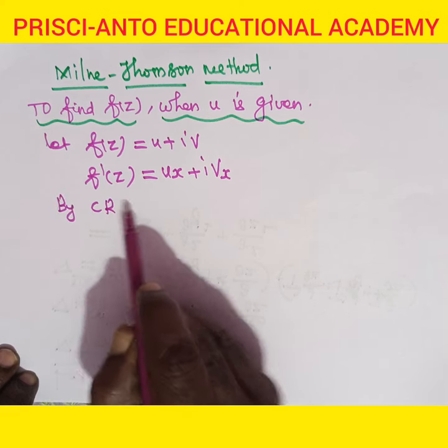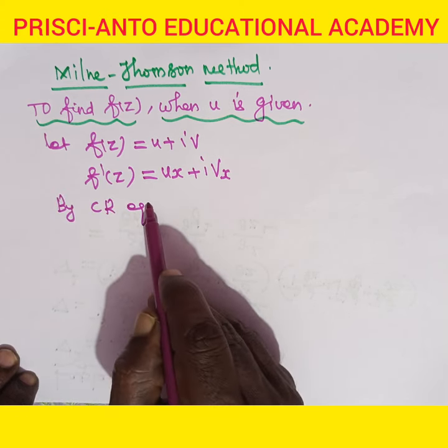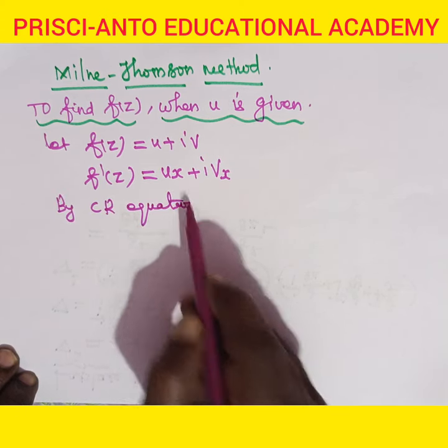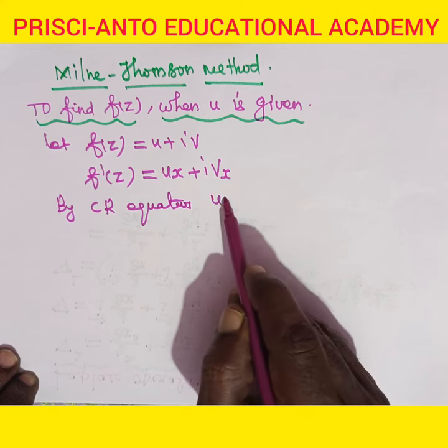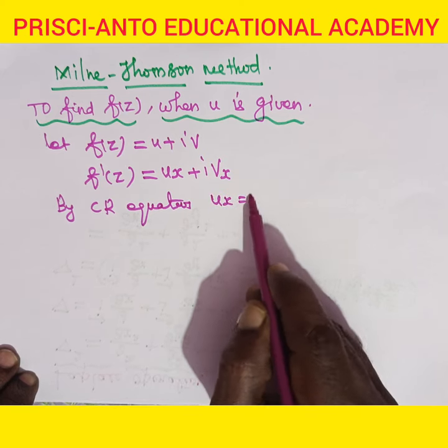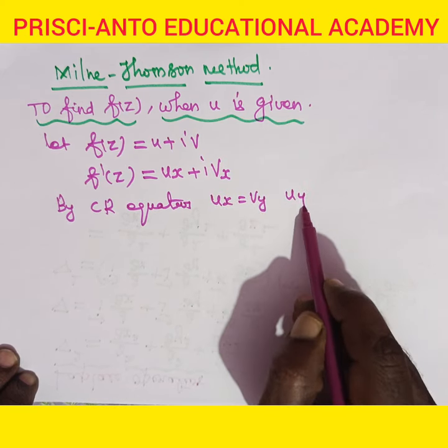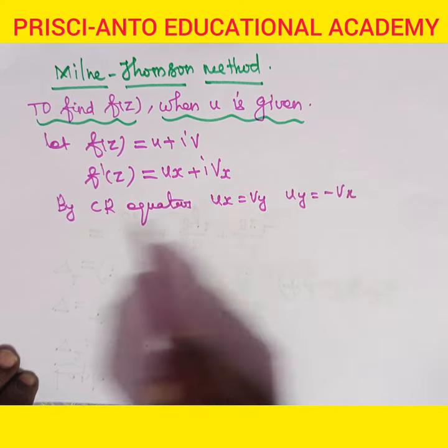the Cauchy-Riemann equations state that ux is equal to vy, and uy is equal to minus vx.